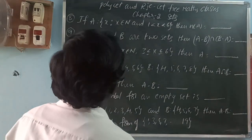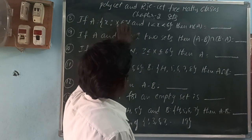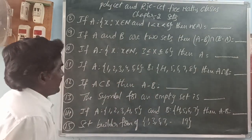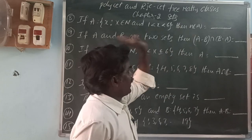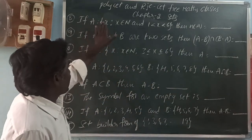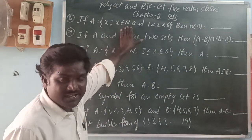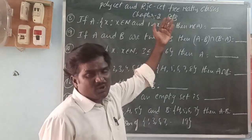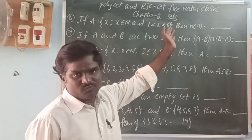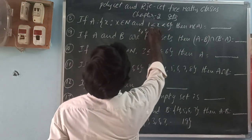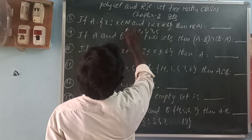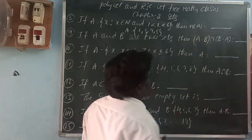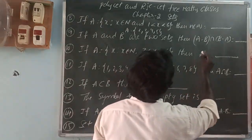Next: if A equals {x such that x belongs to N and 1 less than x less than 6}, then find N of A. A is the set of natural numbers between 1 and 6, so the elements are 2, 3, 4, 5. A equals {2, 3, 4, 5}. So N of A, the number of elements of A, is 4.